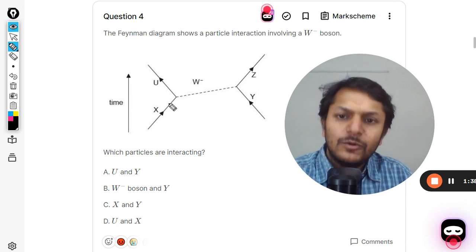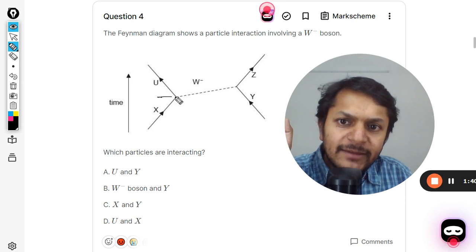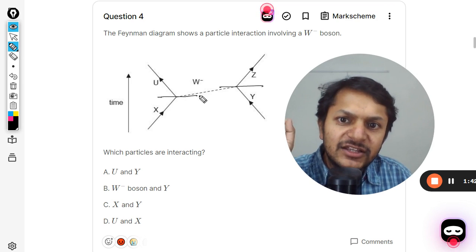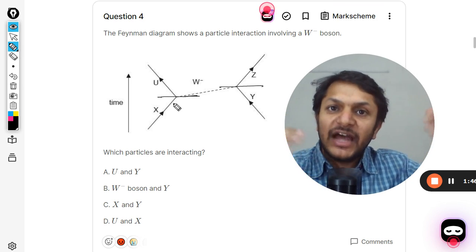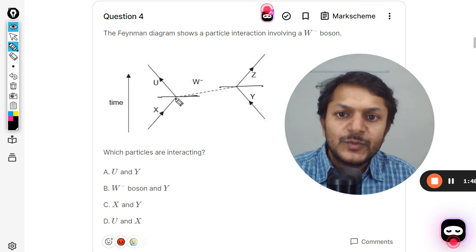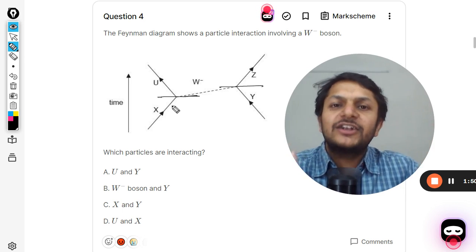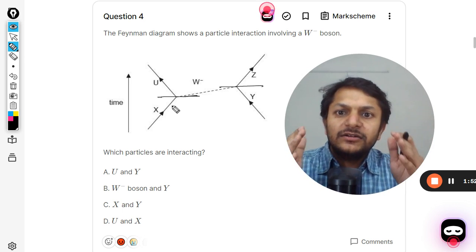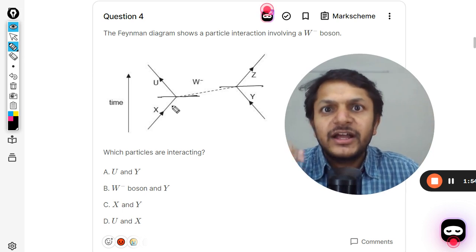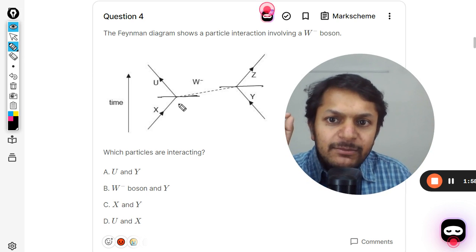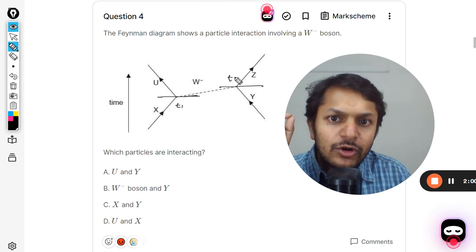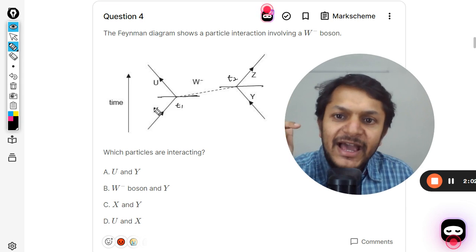What we do is we create two time stamps. These are the two events which are taking place, separated with time and space. Space means they are occurring at two different locations, and time means they are occurring at two different time locations. Let me call this as t1 and this as t2.